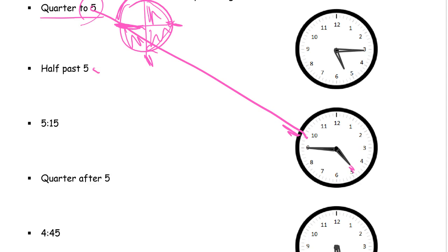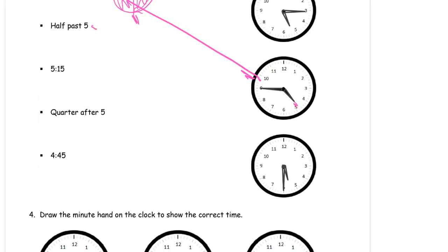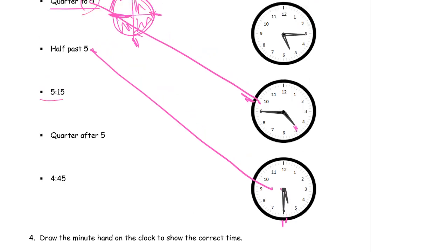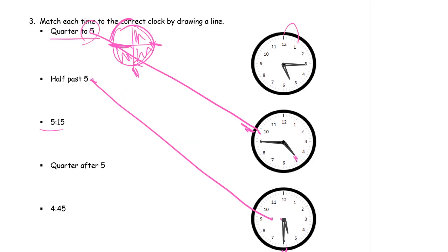Half past five is going to have the hour hand on the five and the minute hand at 30 minutes. Half past five is going to be that one — the hour hand is halfway in between, and the minute hand shows you 30 minutes, which is half of the clock face. Five-fifteen — one of my favorite times. We want 15 minutes after, so that's five, ten, fifteen — there's our minute hand. It's 15 minutes after, and our hour hand is in between the five and the six, so the hour is five and the minutes are fifteen.